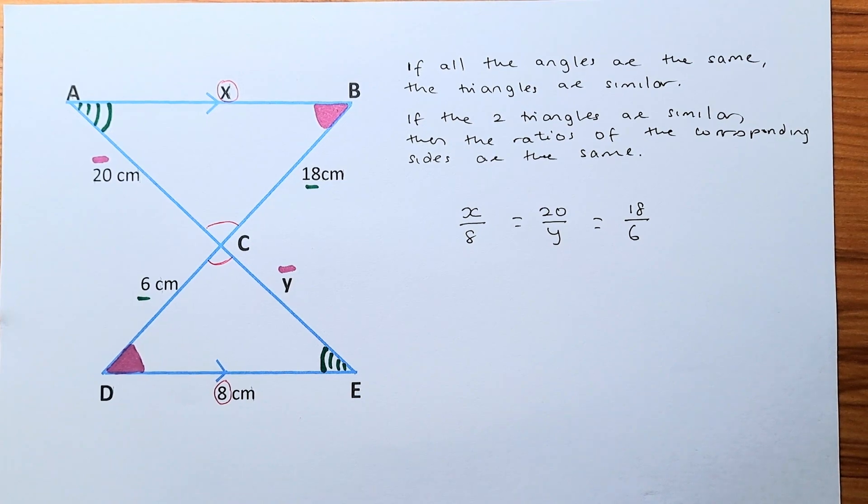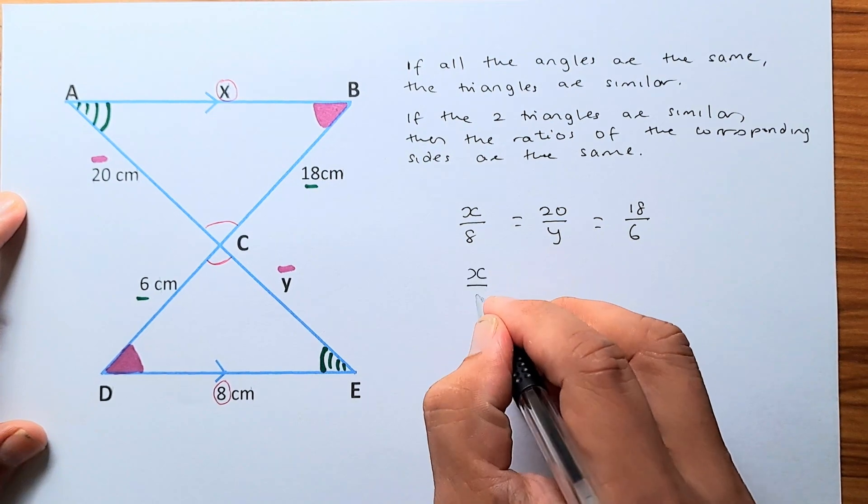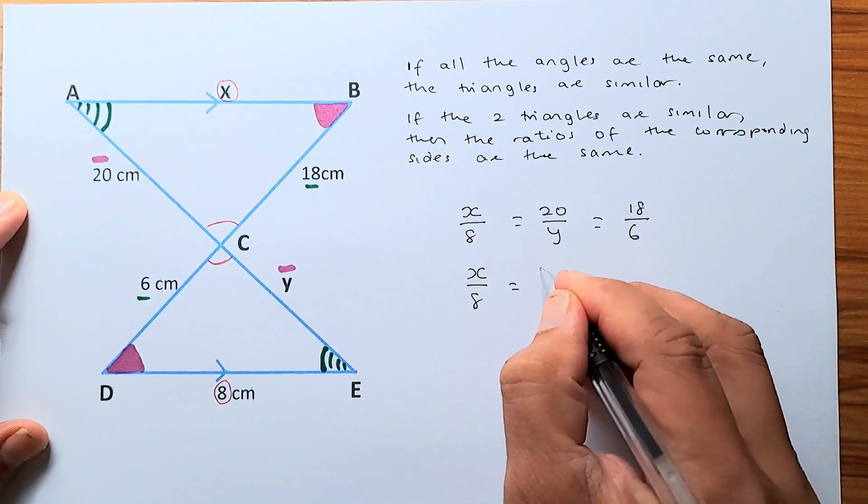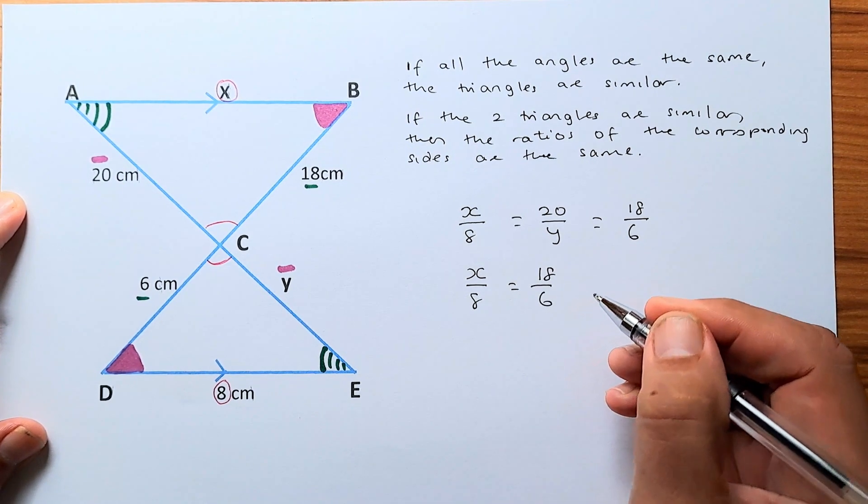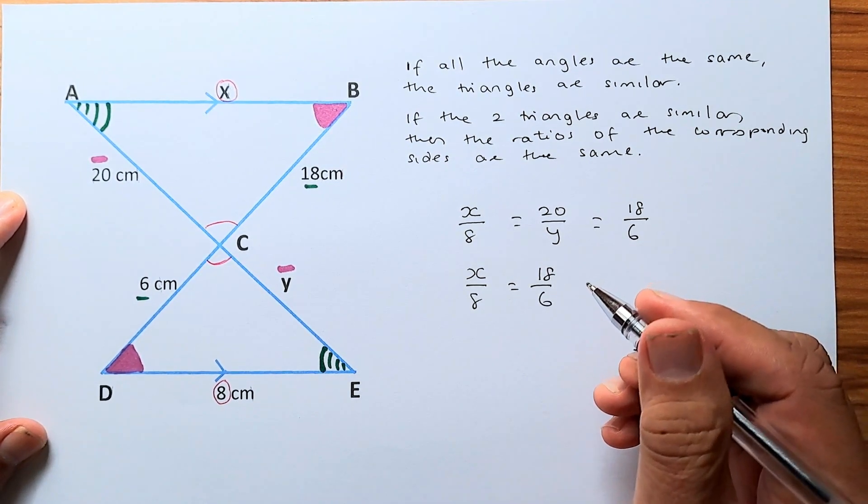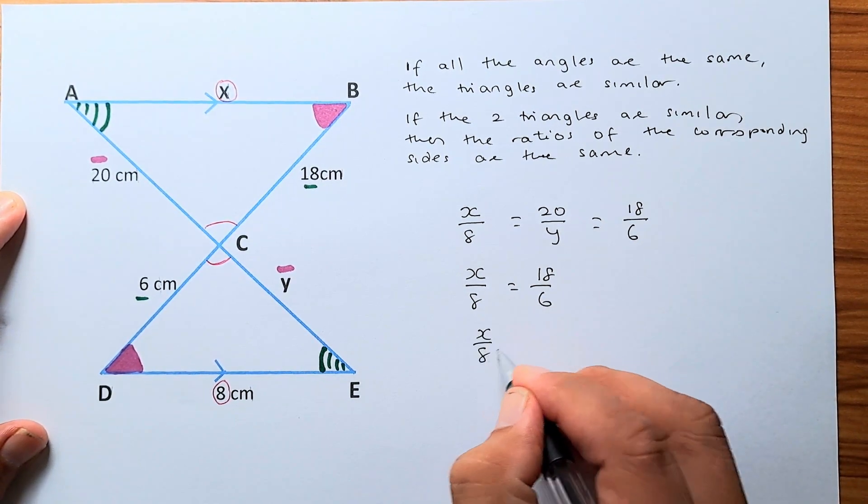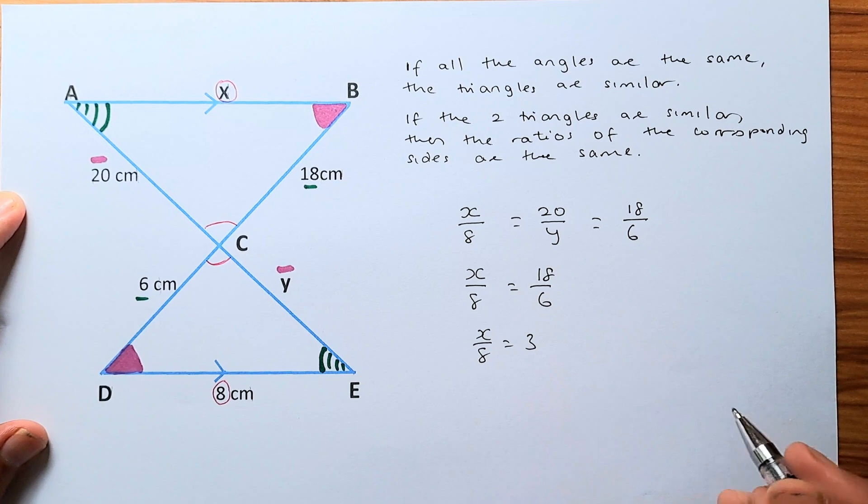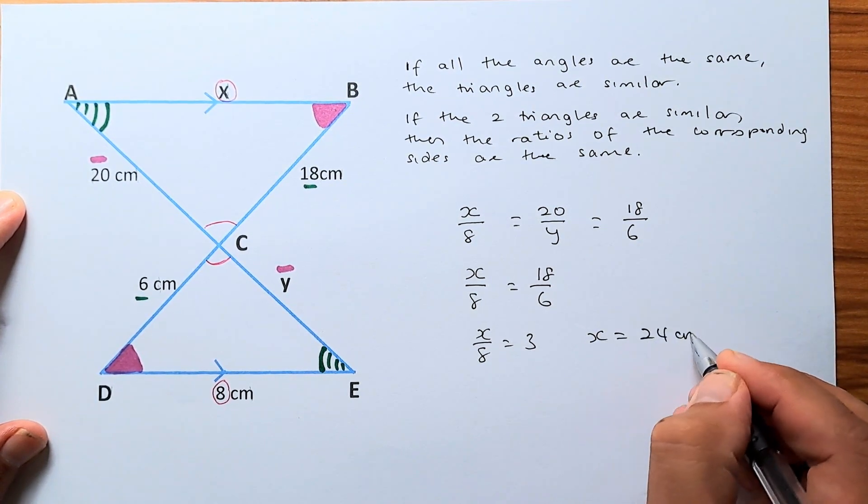So to find the X, we just use this equation. X over 8 is equal to 18 over 6. Why do we use 18 over 6? Because 18 over 6 are the sides that are given and you can solve it. So X over 8 is equal to 3, because 18 divided by 6 is 3. So X is equal to 24 cm.